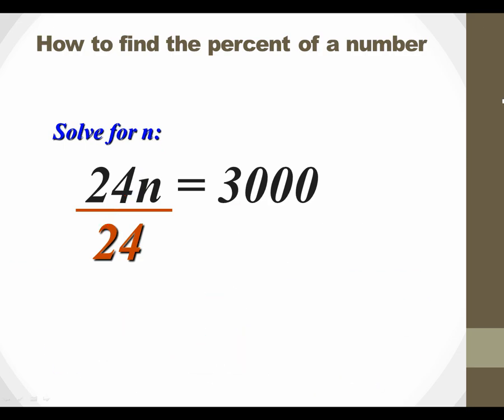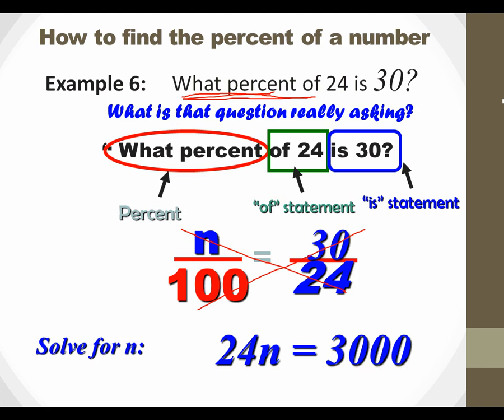See if that kind of makes sense. Let's backtrack a little bit and see. Does that make sense? 125 percent. Does 125 percent of 24 equal 30? That makes sense. Because I'm taking something that's 24, something that's smaller, and I'm getting something that's bigger. So I'd have to use a percent that's greater than 100. That makes sense to me.